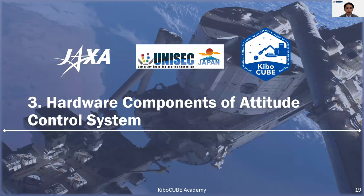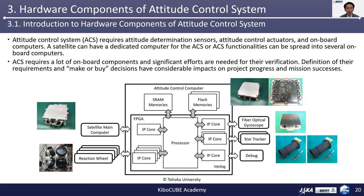In the next chapter, I'd like to introduce the hardware components of the attitude control system. The ACS requires attitude determination sensors, attitude control actuators, and onboard computers. In general, a satellite can have a dedicated computer for the ACS, or ACS functionalities can be spread into several onboard computers. ACS requires a lot of onboard components and significant efforts are needed for verification. You need to pay attention to the fact that the definition of their requirements and make-or-buy decisions have considerable impact on the project progress and mission success.